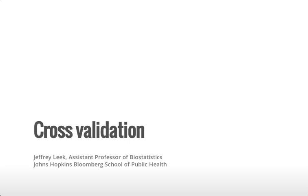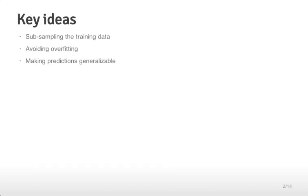This lecture is about cross-validation. This is a way that you can estimate the out-of-sample error rate for predictive functions that you're building. The key idea is that we're going to be taking the training data — remember that we broke our data set up into a training data set, a test data set, and maybe a validation data set — and we're going to sub-sample that in specific ways in order to build estimates of the error rate that we would get if we applied our prediction function to the test or validation data sets.